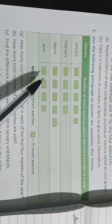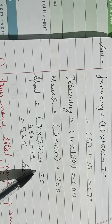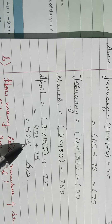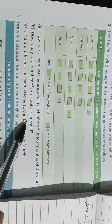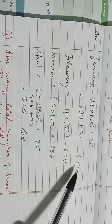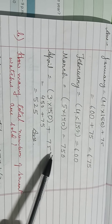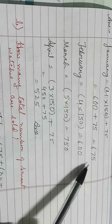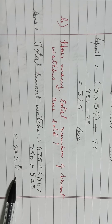For April, children, you can see 3 rectangles, so 3 into 150, and 1 small square, that means plus 75. So 3 times 150 plus 75: 450 plus 75, that is 525 smartwatches sold in the month of April. Now, moving to question B: how many total smartwatches were sold? You just add all four months — 675 plus 600 plus 750 plus 525 — giving a total of 2550 smartwatches sold.